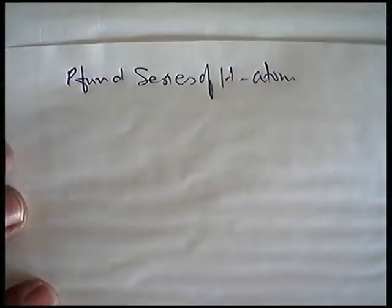When electron in hydrogen atom transit from any higher stable energy level to fifth stable energy level, n equals 5, radiation emitted is said to be in Pfund series.